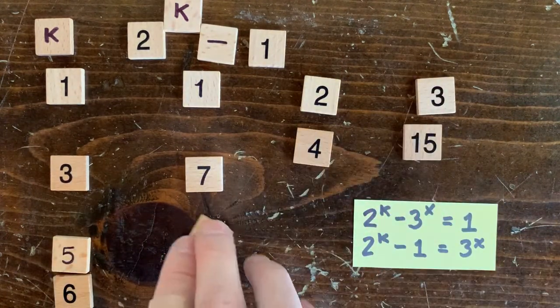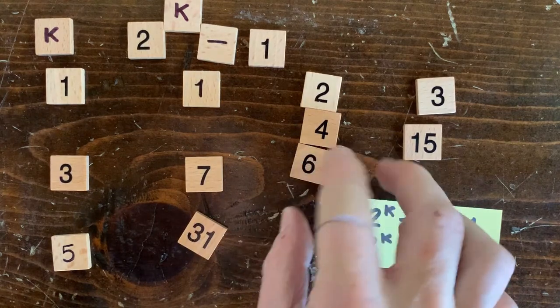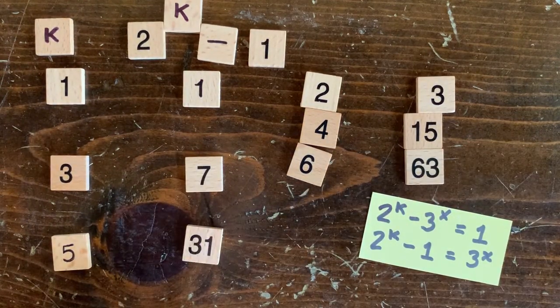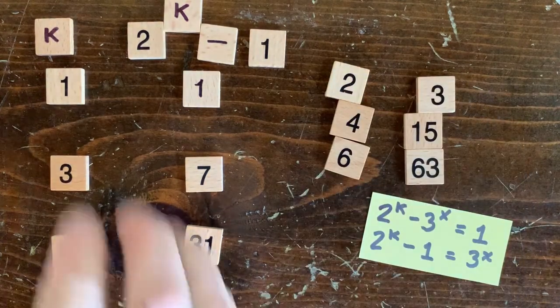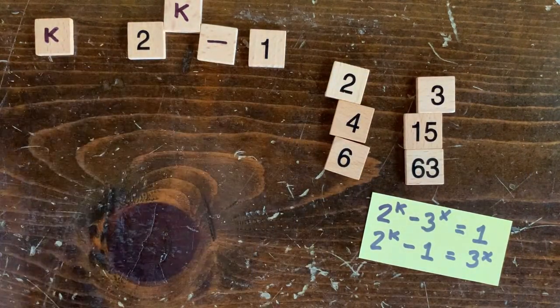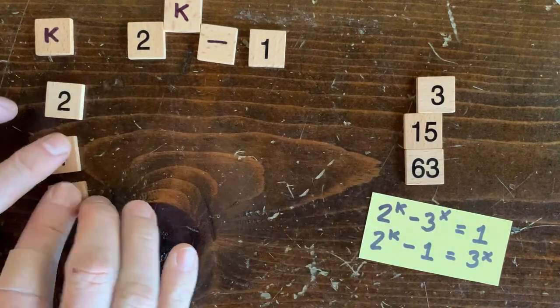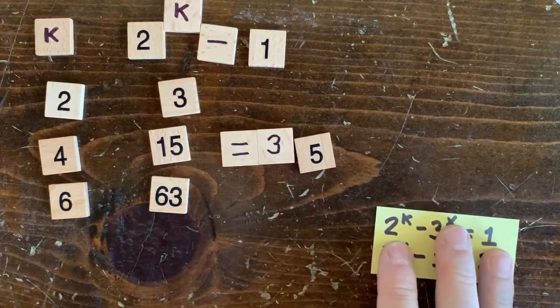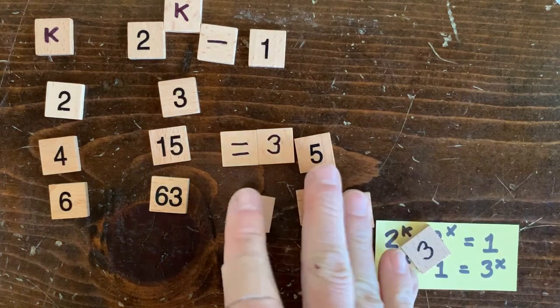Okay, so let's consider two cases. First, when k is odd, you can see 2 to the k minus 1 isn't divisible by 3 at all. So for odd loop lengths, 2 to the k minus 3 to the x is never going to be 1. Now, when k is even, 2 to the k minus 1 is divisible by 3. But notice there's always an additional non-3 factor.